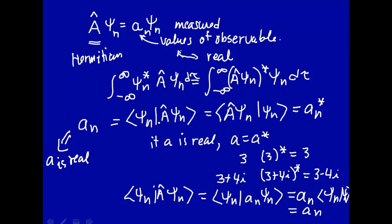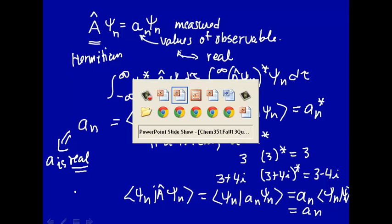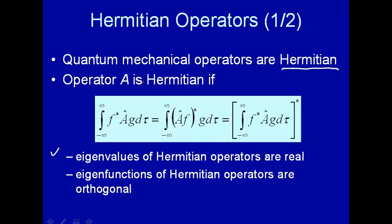So we've shown that if a is Hermitian, if a is Hermitian in a basis relationship, then the eigenvalue and the complex conjugate of the eigenvalue have to be equal. And the only way to have those equal is to make the eigenvalue real. So we've shown that, in fact, the eigenvalues of a Hermitian operator are real.